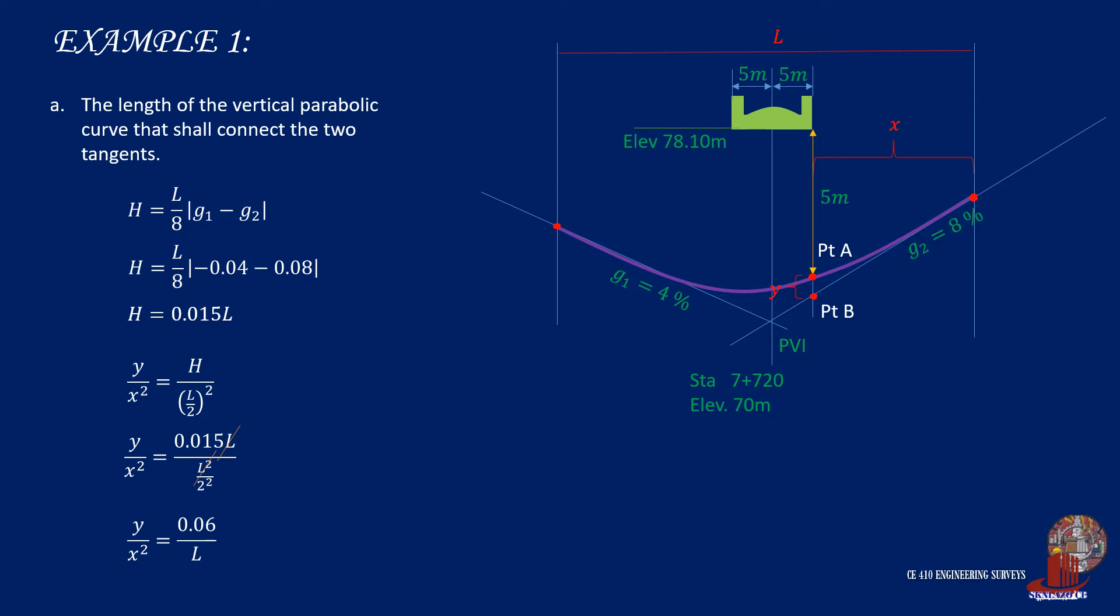So we only need to find y and x at this point. x is taken as the distance between either PC or PT to the point of consideration. In the example, the most critical point is located at the latter half of the curve, so we use PT, and it is denoted as half of L less 5 meters.